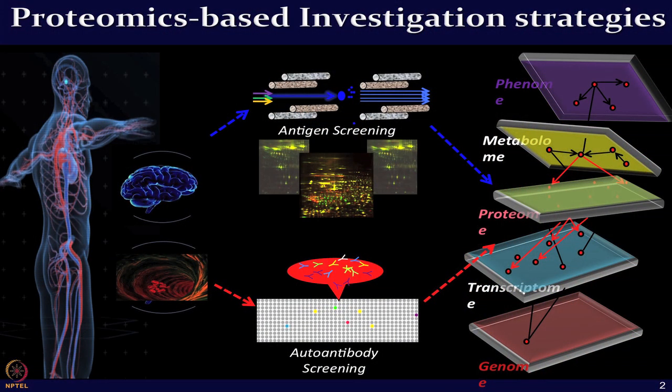Let us talk today about auto antibody screening in brain tumors. Before I come to the workflows, I would like to tell you that when you have a variety of samples from which you can do proteomics investigation, especially in the clinical context, you can choose different technologies to address different types of biological questions. Here I have shown two different paths: one to look for the most abundant antigen screening using gel-based platforms or mass spectrometry-based proteomics, and alternatively, especially for biofluids, one could use protein array platforms to look for auto antibody detection. On the same samples one could obtain complementary information, all contributing towards systems-level information.